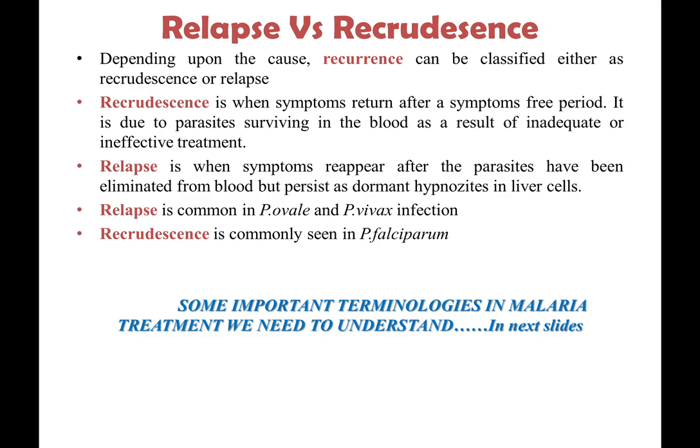A few terms we should understand: relapse versus recrudescence. Recurrence can be classified as recrudescence when symptoms return after a symptom-free period, due to parasites surviving in the blood as a result of inadequate or ineffective treatment. Relapse is when, after parasites have been eliminated from the blood by drug therapy, some parasites go dormant in the liver — called the hypnozoite form — and then suddenly make their existence felt. Relapse is very common with Ovale and Vivax infections, while recrudescence is commonly seen with Plasmodium falciparum.